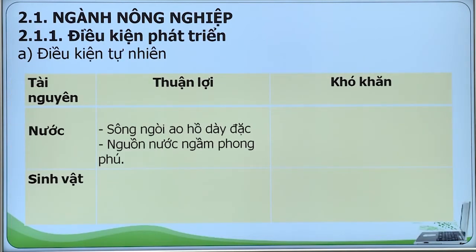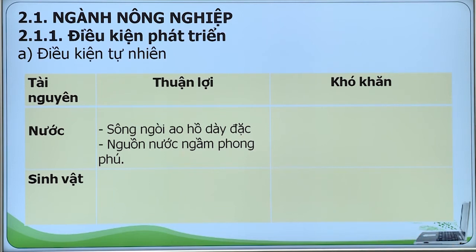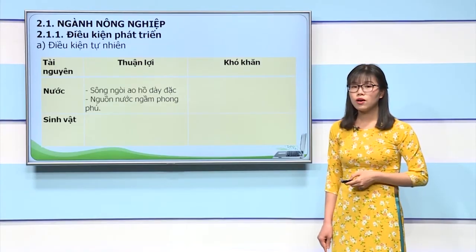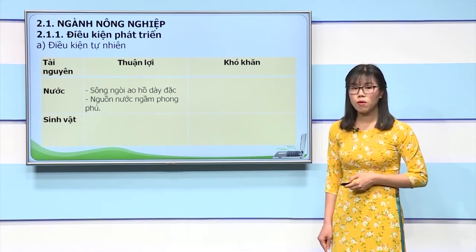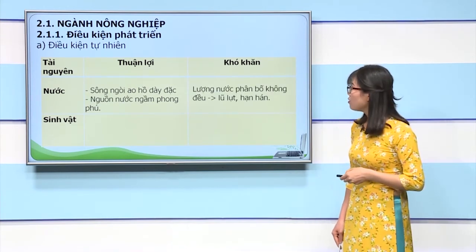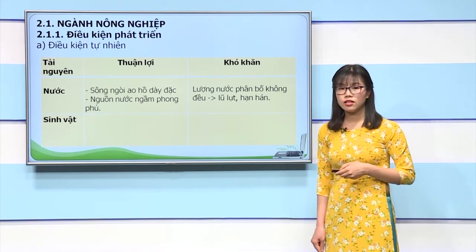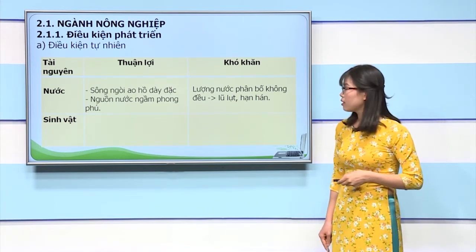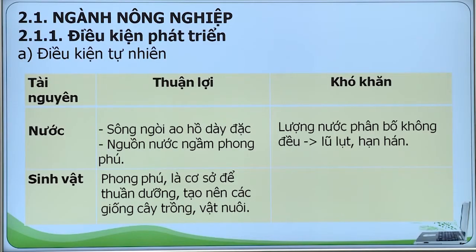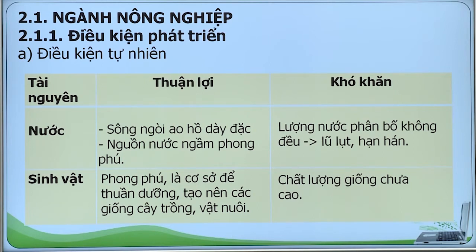Về tài nguyên nước, nước ta có hệ thống sông ngòi, ao hồ, kênh rạch dày đặc, là nguồn cung cấp nước tưới dồi dào cho cây trồng. Nguồn nước ngầm phong phú, là nguồn nước tưới quan trọng nhất vào mùa khô ở các vùng Tây Nguyên và Đông Nam Bộ. Về khó khăn, lượng nước phân bố không đều theo thời gian gây ra lũ lụt hạn hán. Tài nguyên sinh vật của nước ta phong phú là cơ sở để thuần dưỡng, tạo nên các giống cây trồng vật nuôi thích nghi với điều kiện sinh thái địa phương, nhưng chất lượng giống nội địa thường chưa cao.